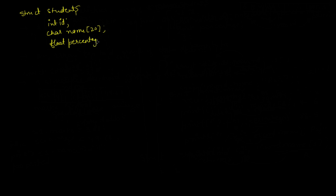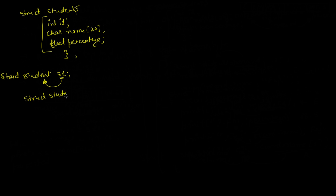This is the structure for students. If I declare struct student s1, then s1 is a variable of type student. If I declare struct student star s2, then s2 is a pointer of type student, and this s2 pointer can point to any variable of type student.